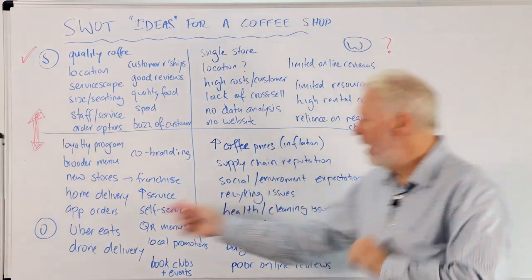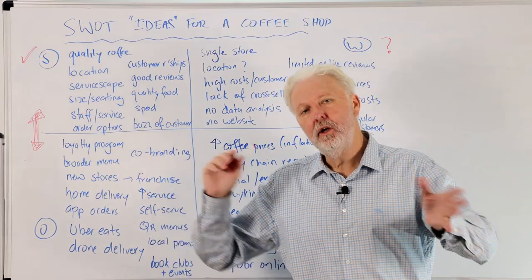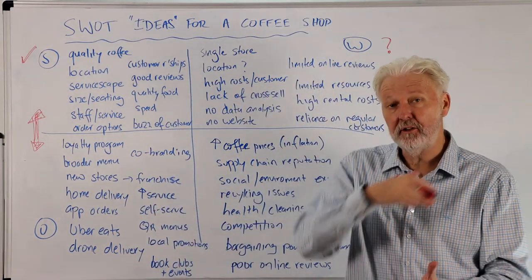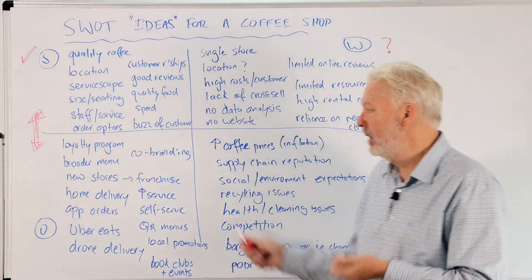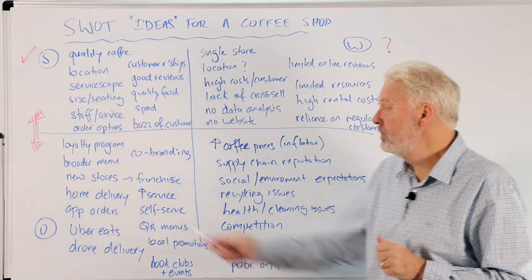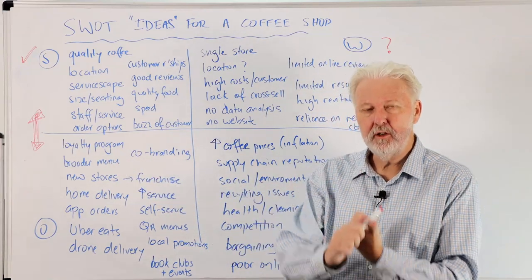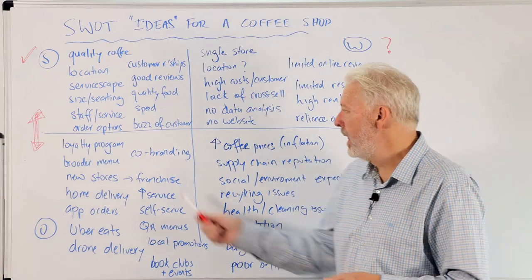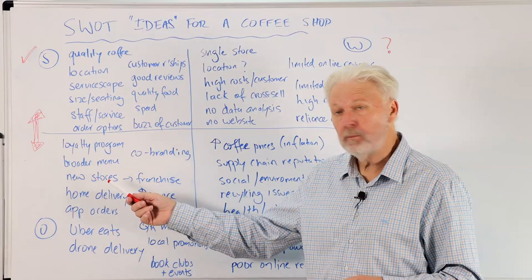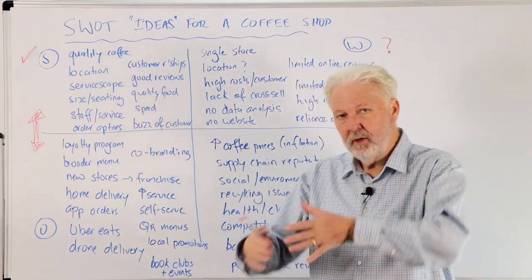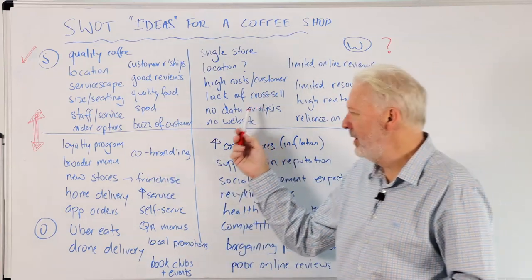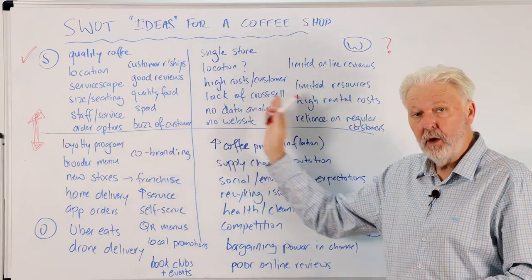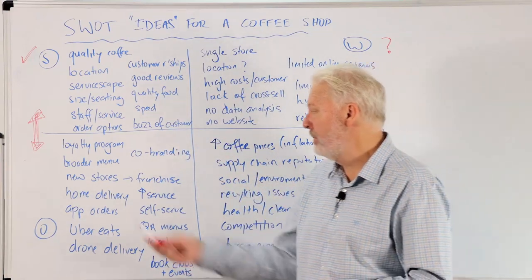Now let's look at opportunities. There are lots of ideas here — typically in a plan we would prioritize and select some of these to form the basis of our strategy. We may want to introduce a loyalty program: they're designed to capture data, keep customers coming back, and increase sales. We may also want to expand our menu — adding more coffee and food options grows our income, gives us more to cross-sell, and hopefully increases sales per customer, which begins to address some of those weaknesses.